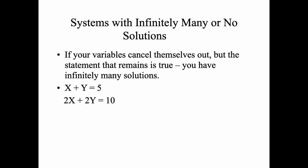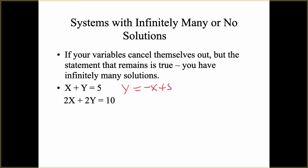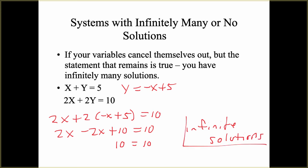So if we do substitution here and I say that Y is going to be negative X plus 5, and I plug this into the bottom equation, I get 2X plus 2 times negative X plus 5 equals 10. 2 times negative X is negative 2X. 2 times 5 is 10. And when I solve this, 2X minus 2X goes away and I'm just left with 10 equals 10. This is infinite solutions. And what happens if you would graph these, they are the same line. Variable goes away, true statement, infinite solutions.